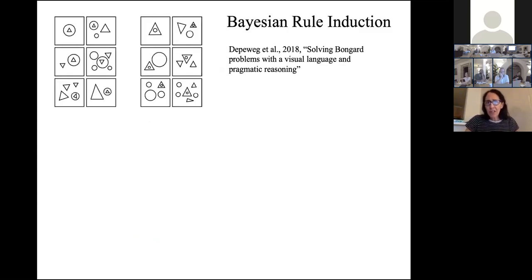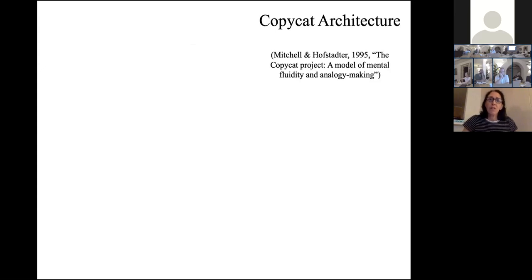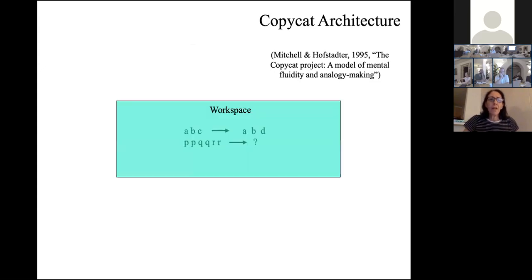I was going to talk about Bayesian rule induction but don't have enough time — it's an interesting approach to Bongard problems, though the big problem is you have to build in a huge number of priors and perform a very large search. I did want to talk about the Copycat architecture that I worked on with Hofstadter, because I think it's very relevant. It was particularly applied to letter string analogies, but the architecture was meant to be more general — a general architecture for analogy making and abstraction.